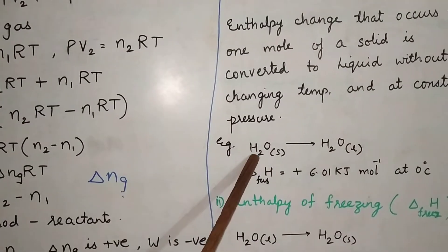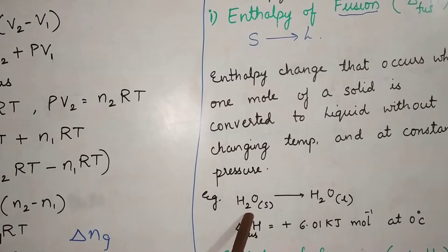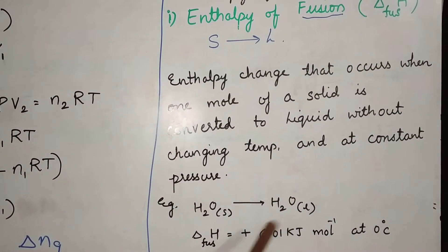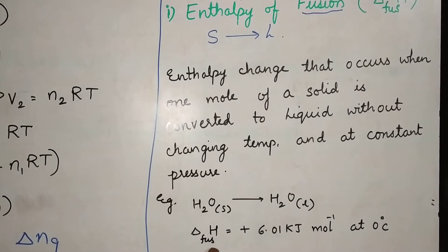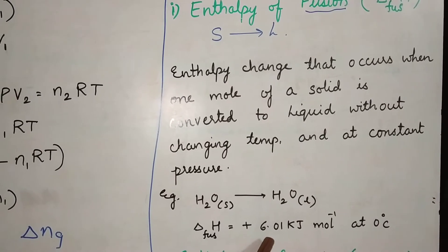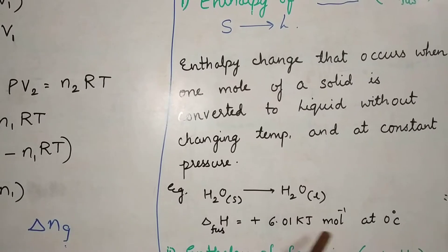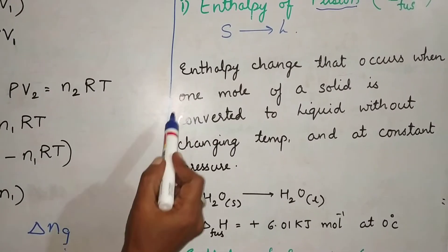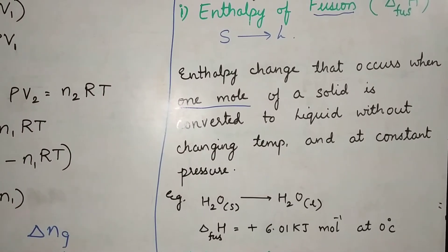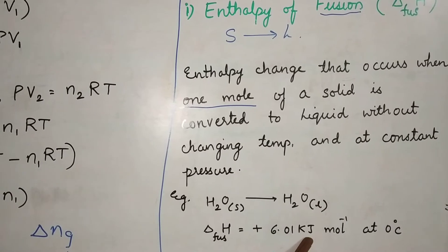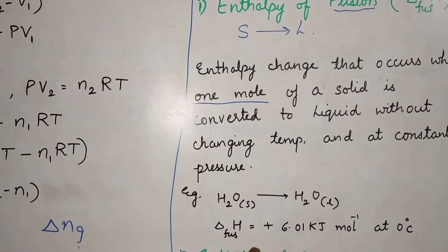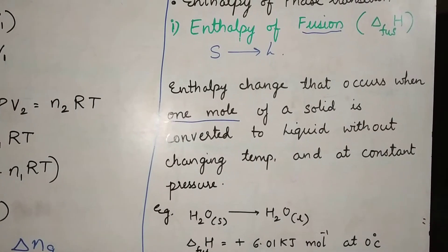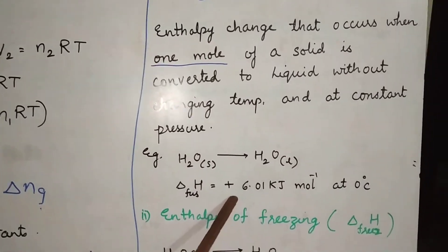For example, water: solid water is ice, and ice melting — solid ice converted into liquid water. The delta H of fusion during this process is plus 6.01 kilojoules per mole. The value is always expressed per mole because the definition specifies one mole of a substance. The positive sign indicates it is an endothermic process — heat is absorbed during this physical change.